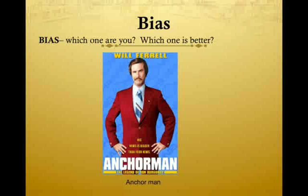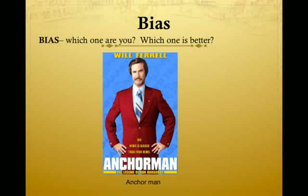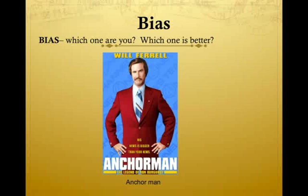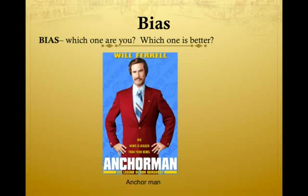The final thing in performance assessments we need to talk about is bias. A couple types of bias exist. One is the anchor — where you kind of don't like to use the extremes. You don't give a lot of A's, you don't give a lot of F's. Everybody's a C, maybe a couple B's and D's, so you don't really represent the true variability that exists in a classroom.